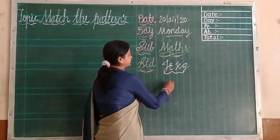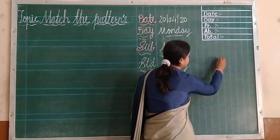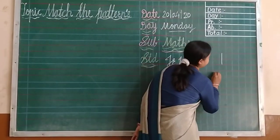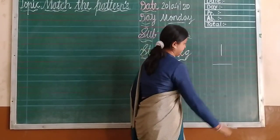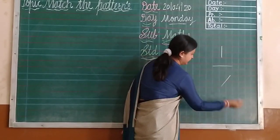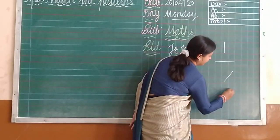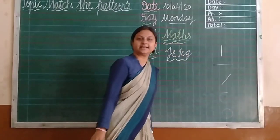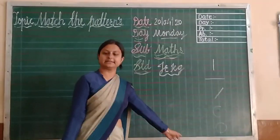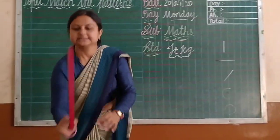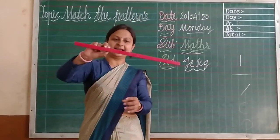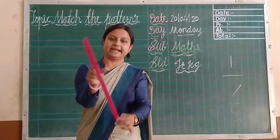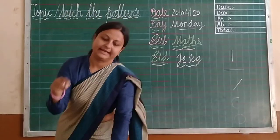First of all, let's review the patterns: standing line, slipping line, slant line, curl, and circle. I hope you can understand all the patterns. See here — standing line, slipping line, slant line, slant line, and curl and circle.